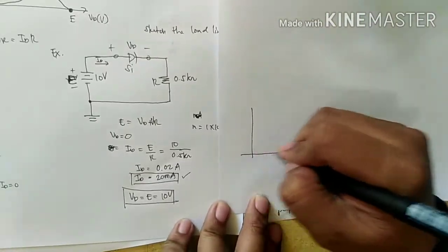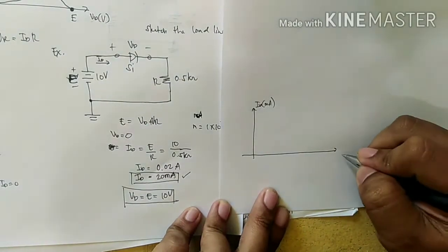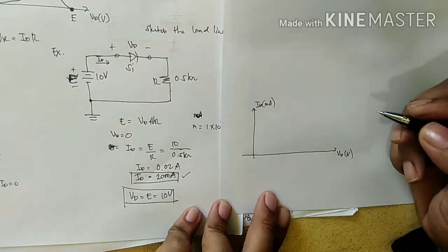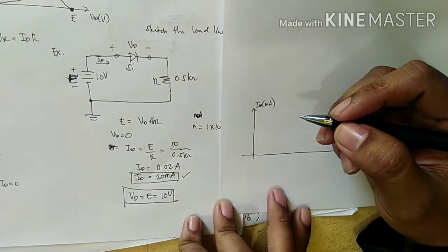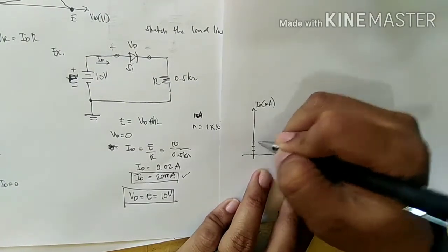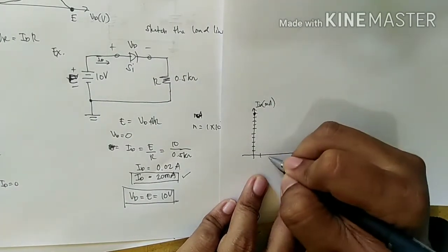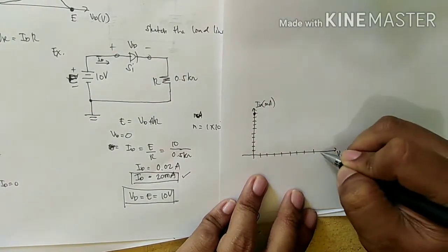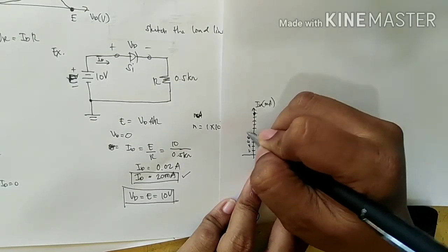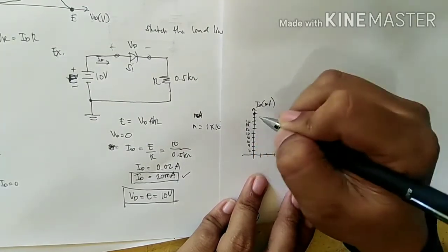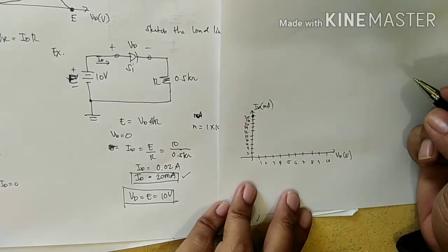So this is ID in milliamps and this is VD in volts. By two: 2, 4, 6, 8, 10, 12, 14, 16, 18, 20. And 2, 3, 4, 5, 6, 7, 8, 9, 10.